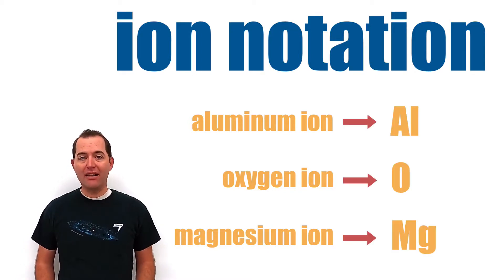Ions are shown with the symbol for the atom, which is the same as on the periodic table, and with a charge in the top right corner.